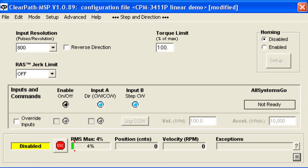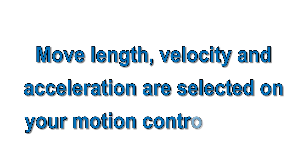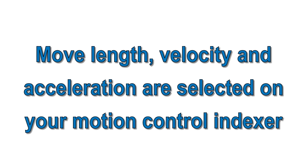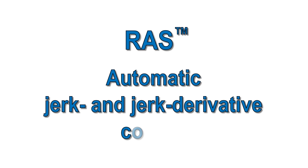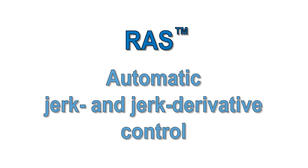You'll set most of your motion parameters on your motion control indexer — move length, velocity, and acceleration. But ClearPath has a sophisticated tool to control the rate of change of the acceleration, technically the jerk and jerk derivative, so that all changes in speed are made very smoothly.